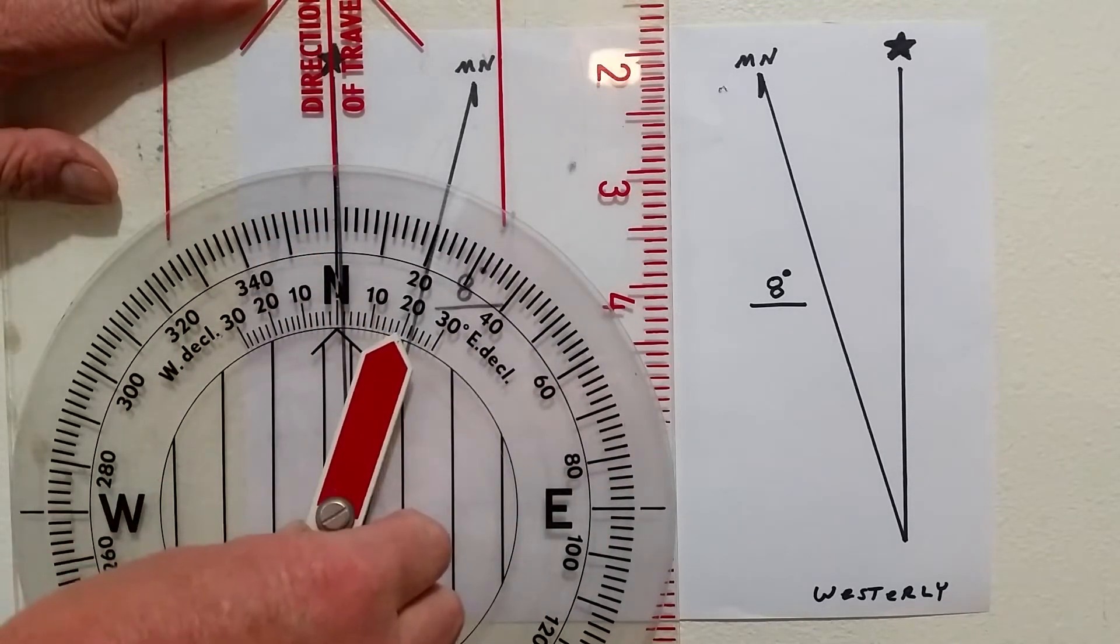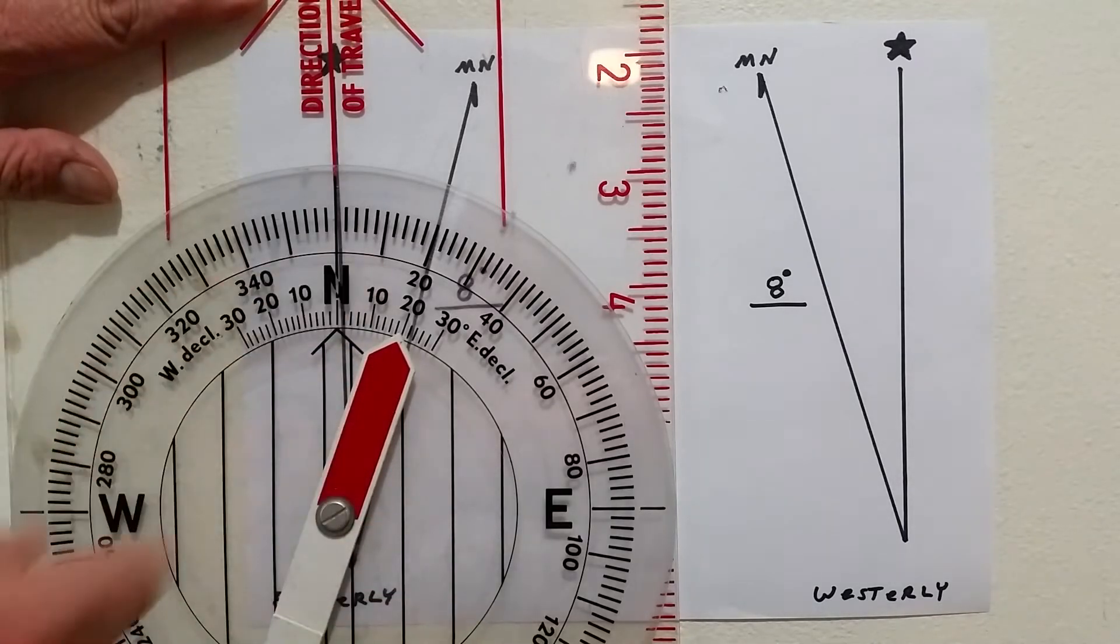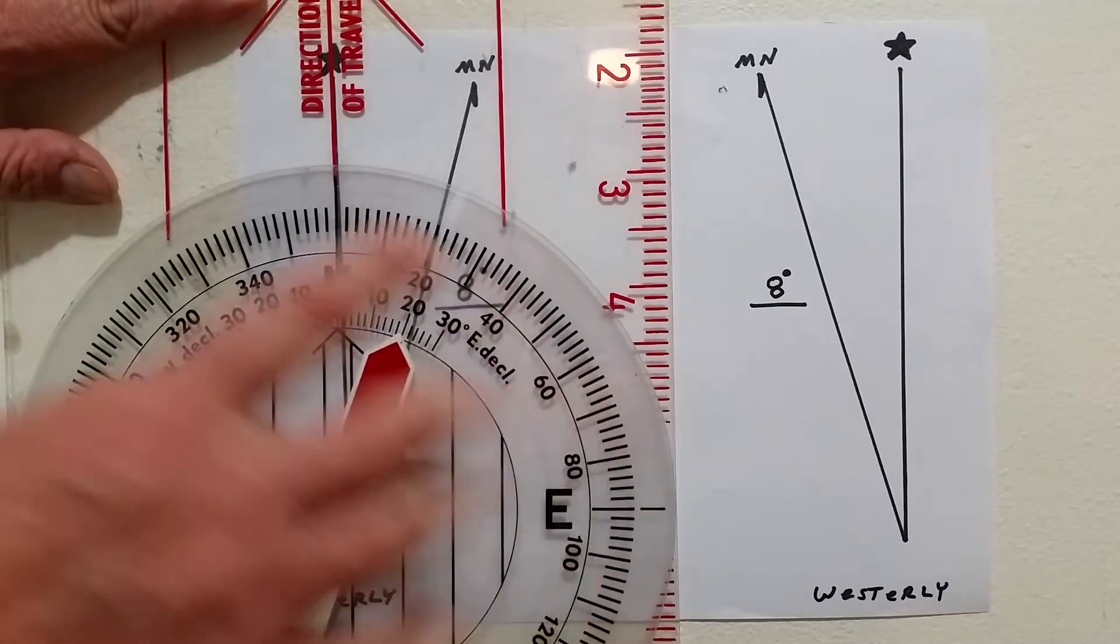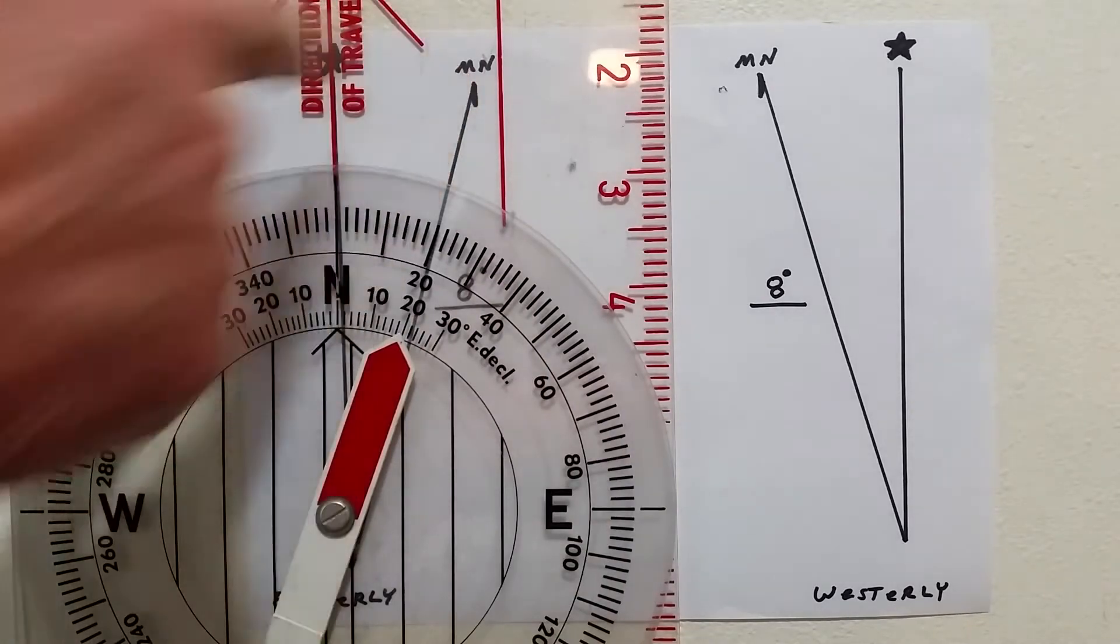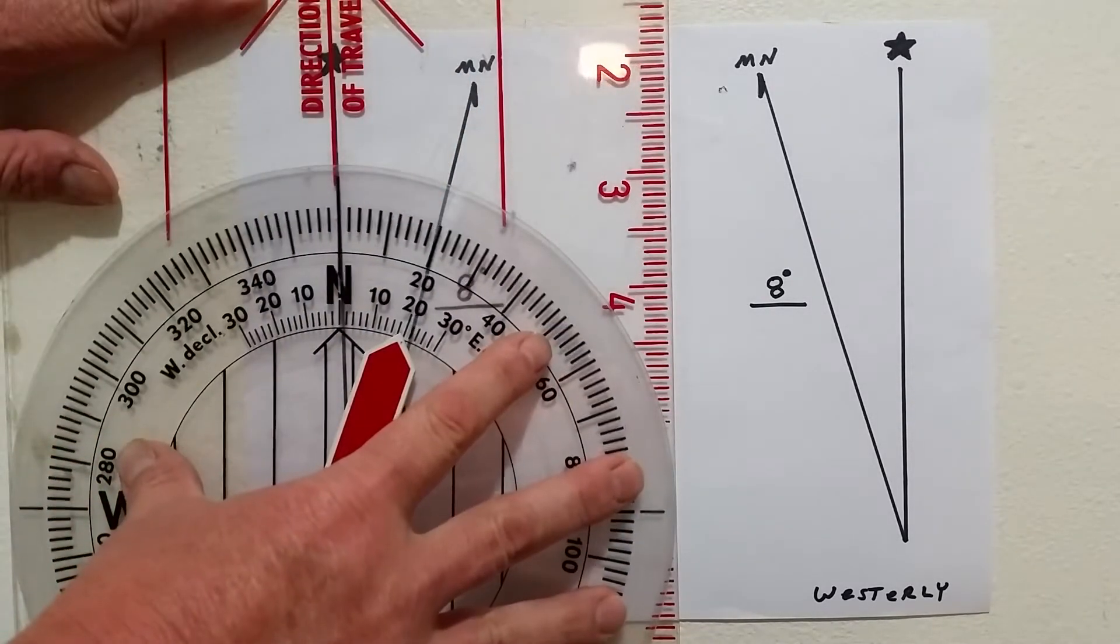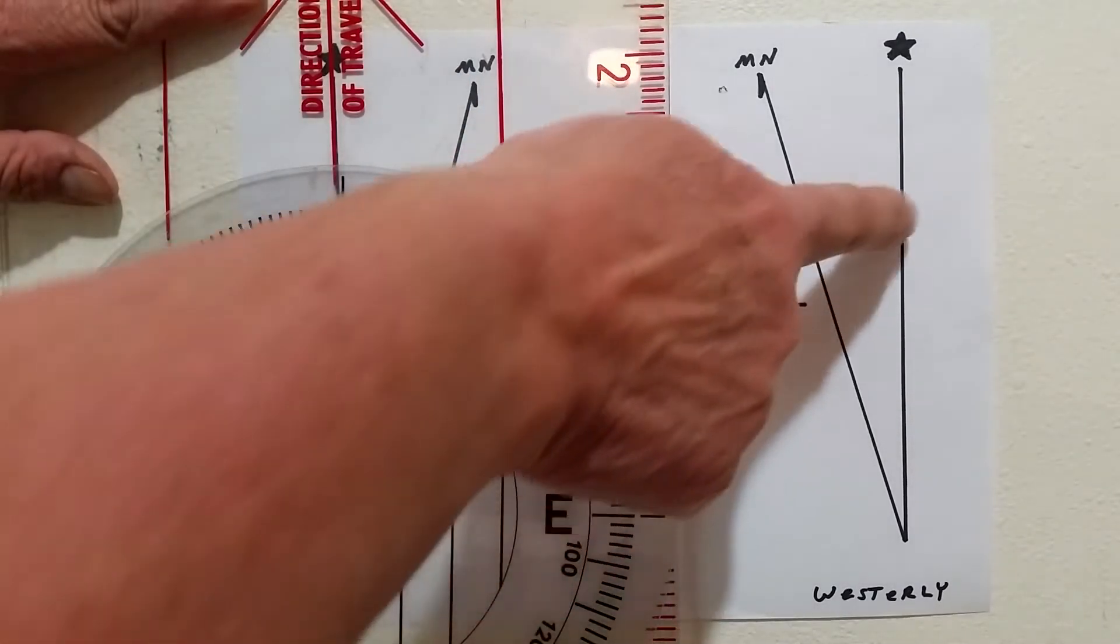So I'm lined up with direction of travel and my north. And of course, this is pointing toward magnetic north at all times. So I'm going to turn this from the star to the magnetic north, eight degrees. I don't really care what these lines are showing right now.